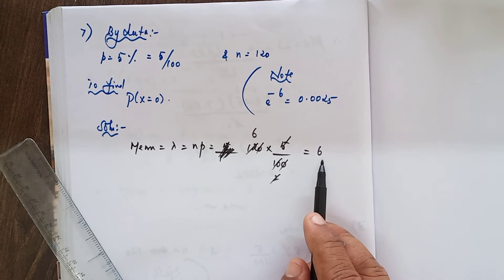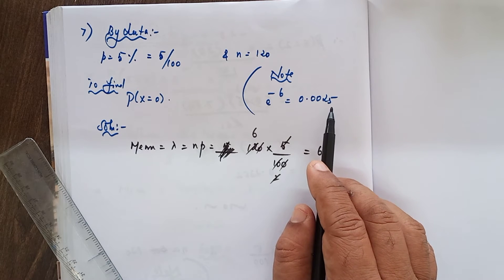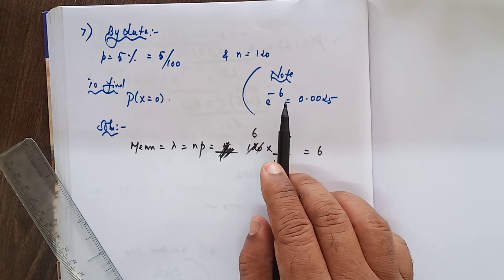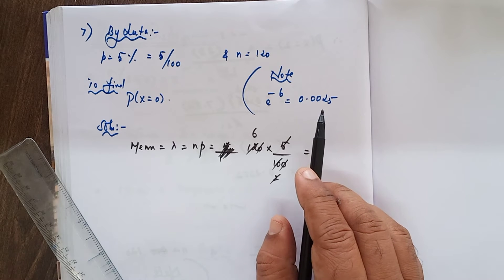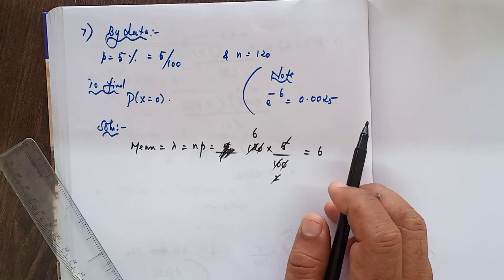Since lambda equals 6, e power minus 6 value equals 0.0025. This is not given in the textbook, but will be given in the question paper while writing the exam.